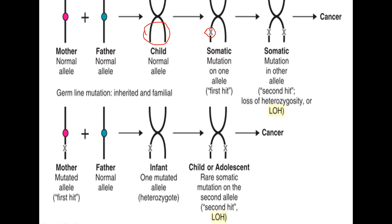The second condition occurs in germline mutation, which results in the inherited forms of cancer. Here, the mother's allele is found to be defective. The offspring has one defective allele — this is a heterozygous condition. Later on, the other allele inherited from the father also develops another mutation. This is the second hit, and this condition is called the loss of heterozygosity, which results in cancer.